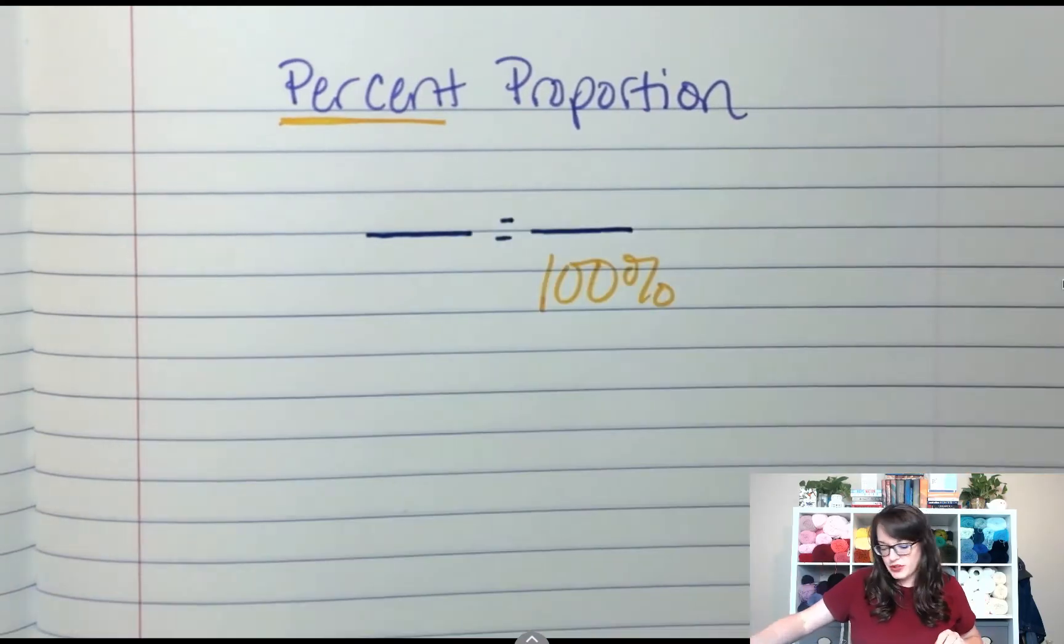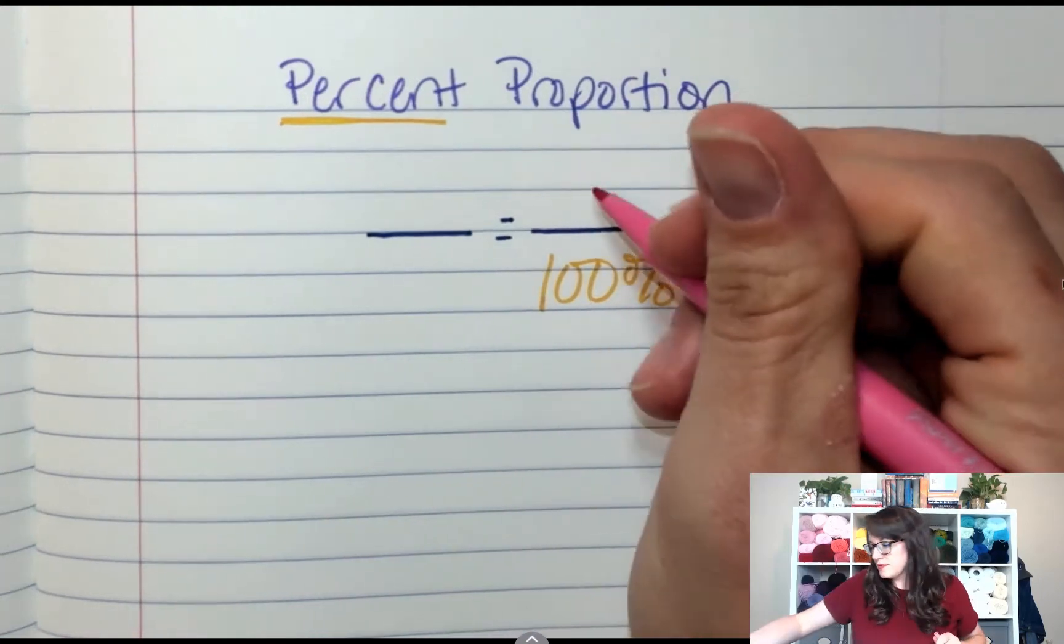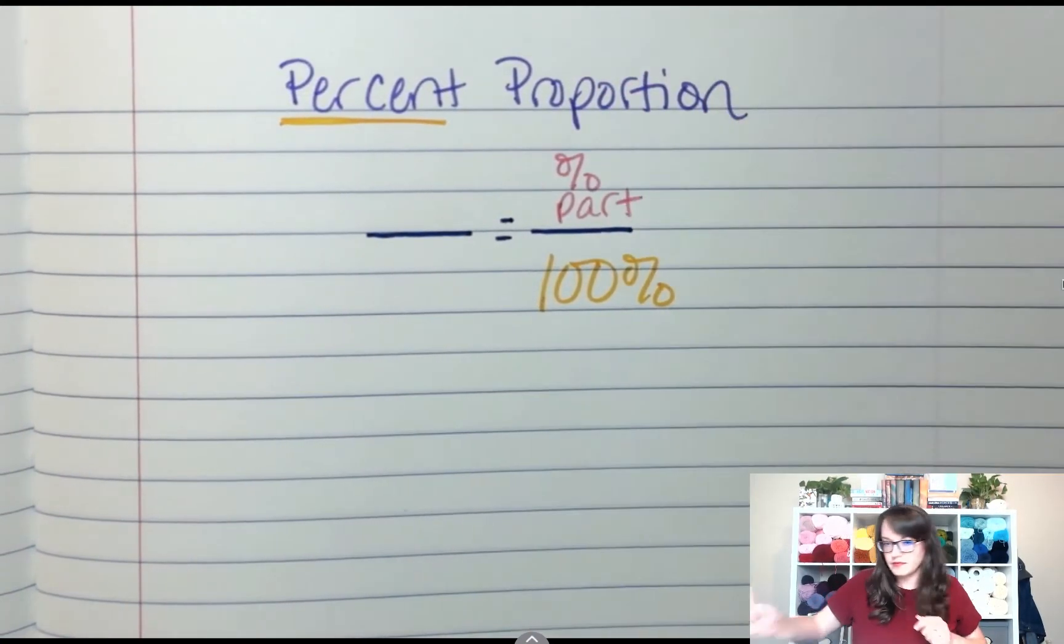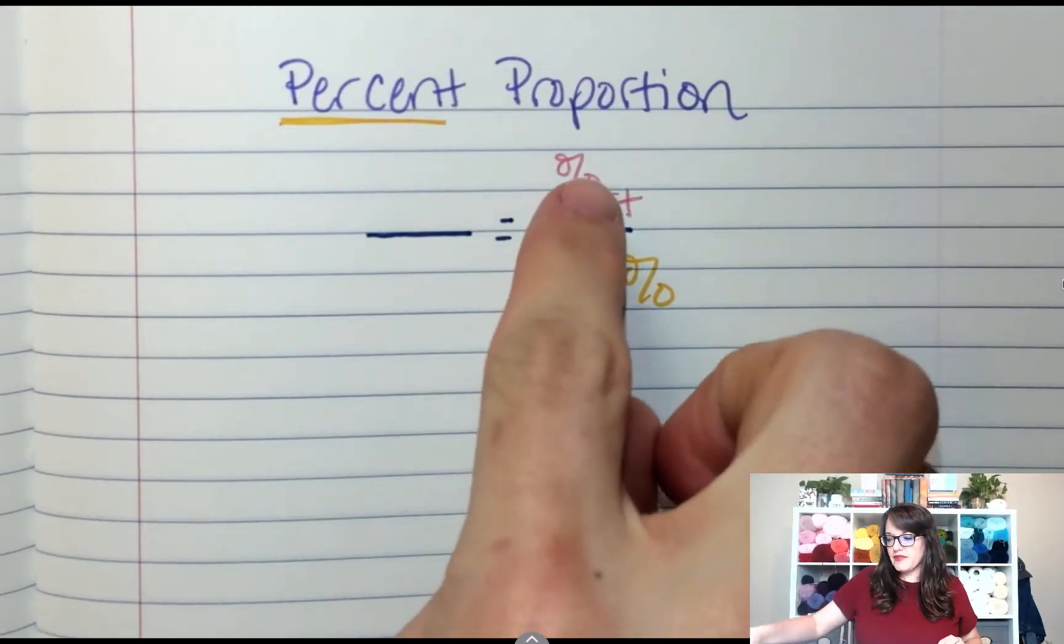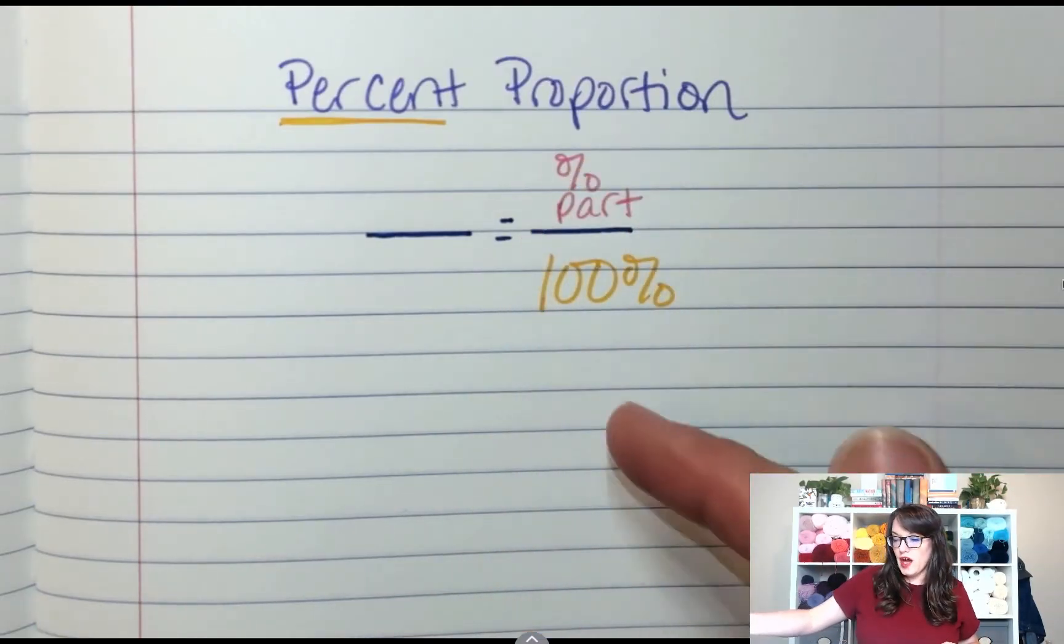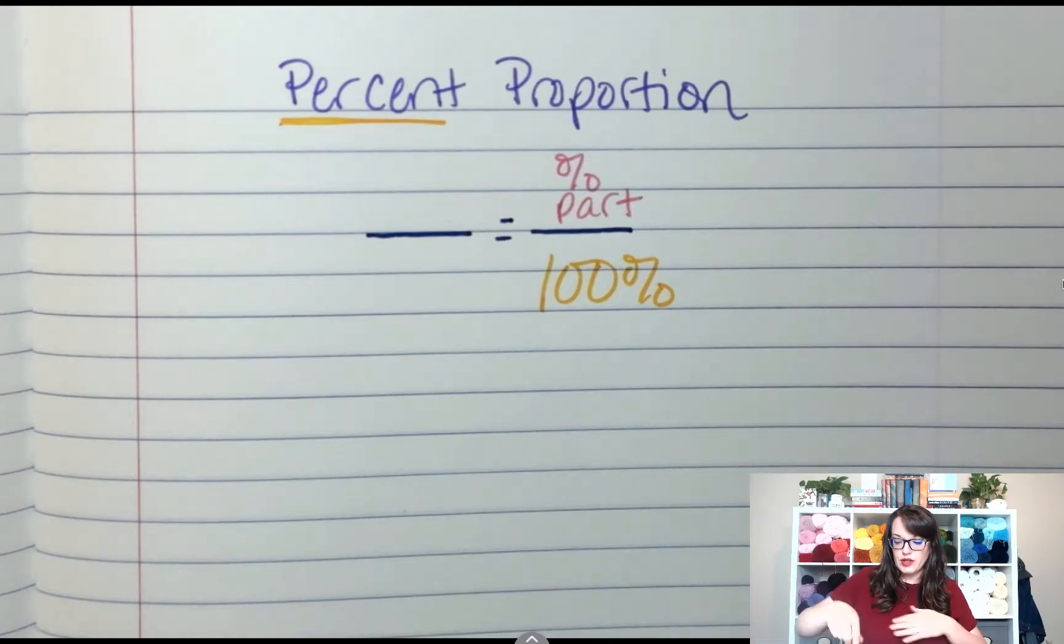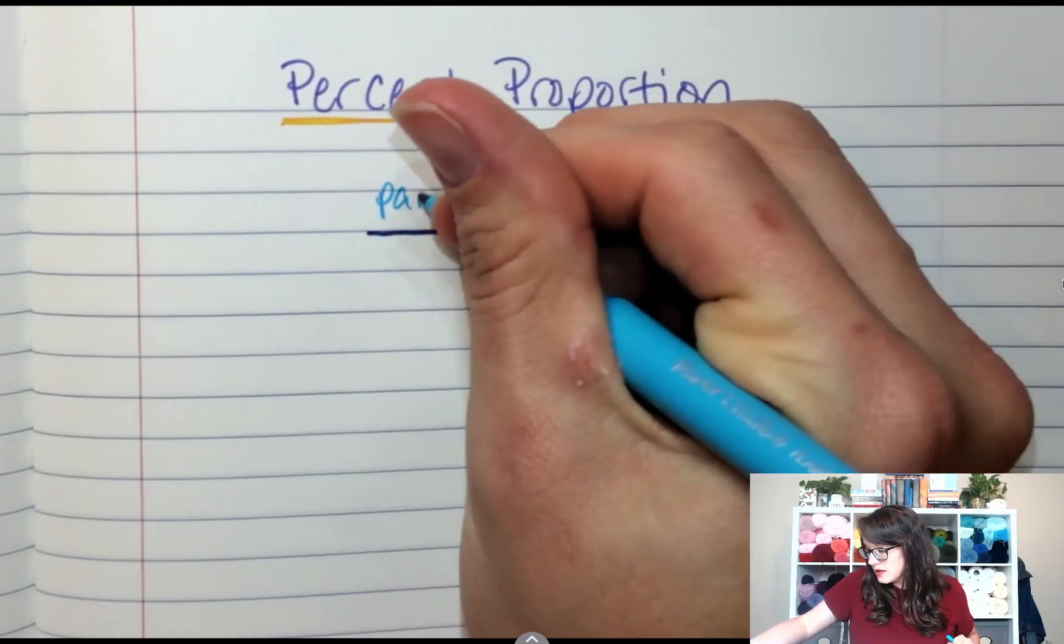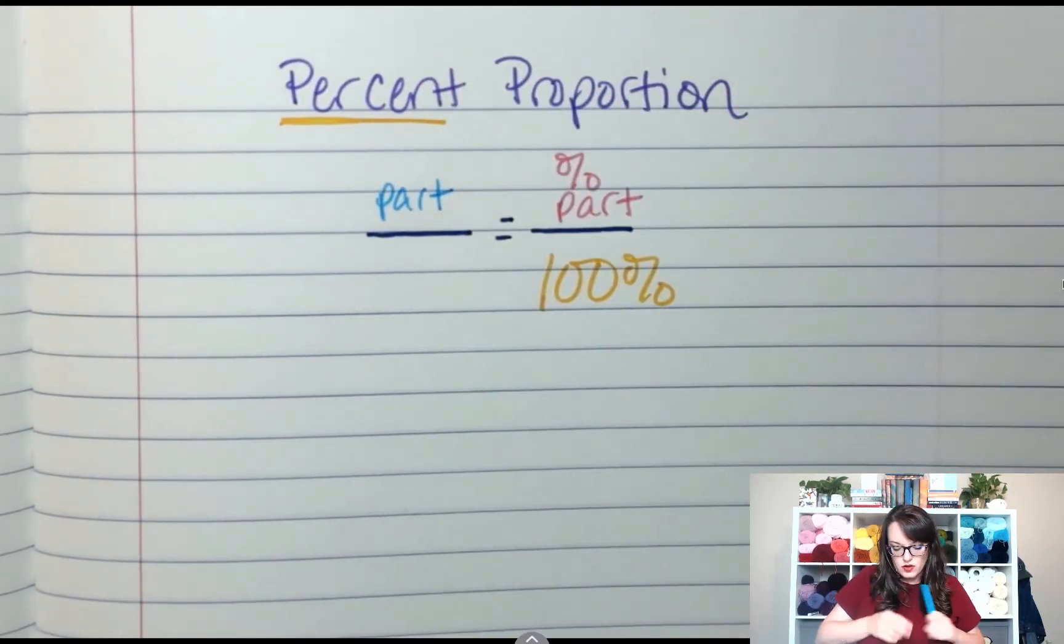This is the percent part. Because if this is the percent of the part over the hundred percent total, then on the left side, we are going to put part over total.